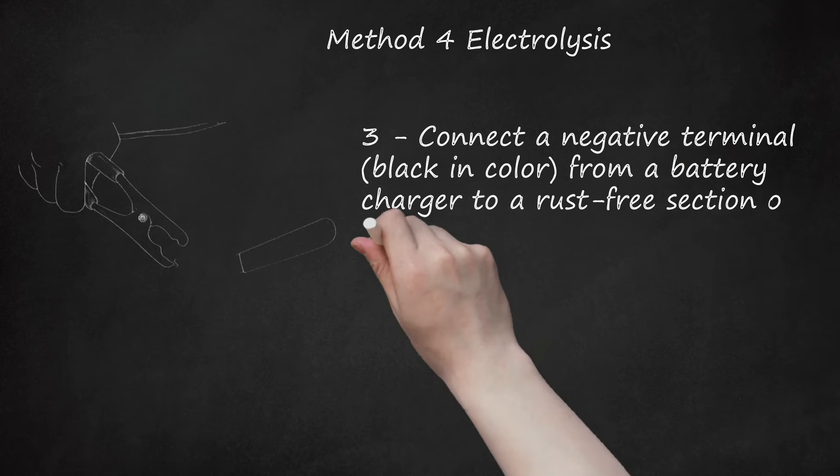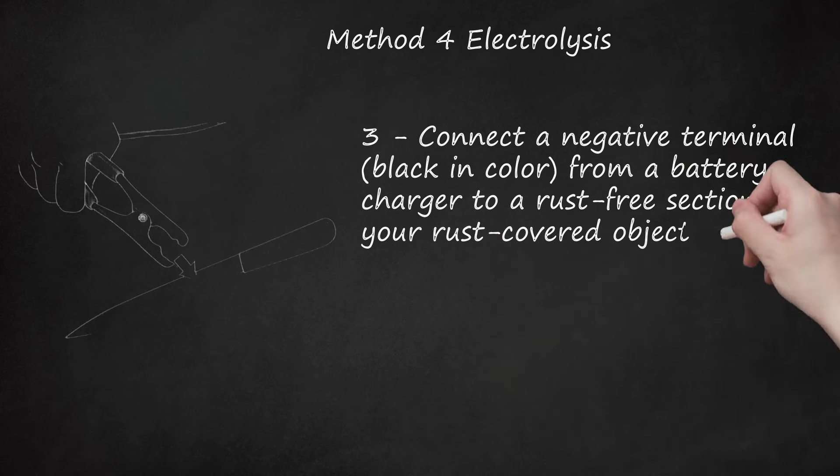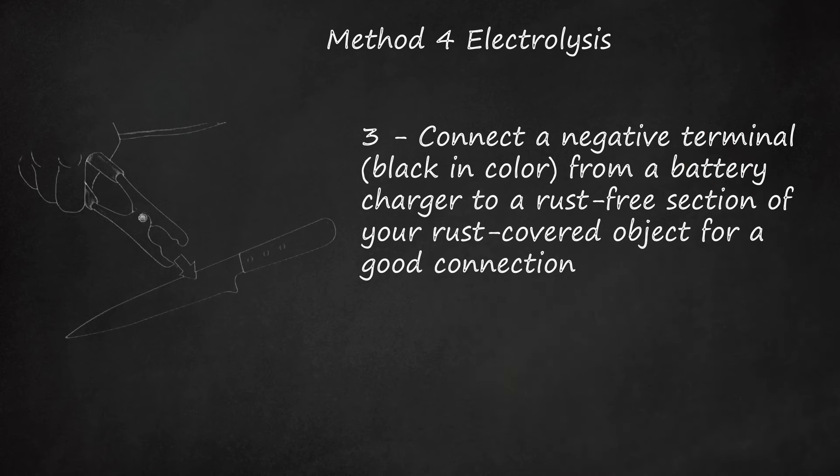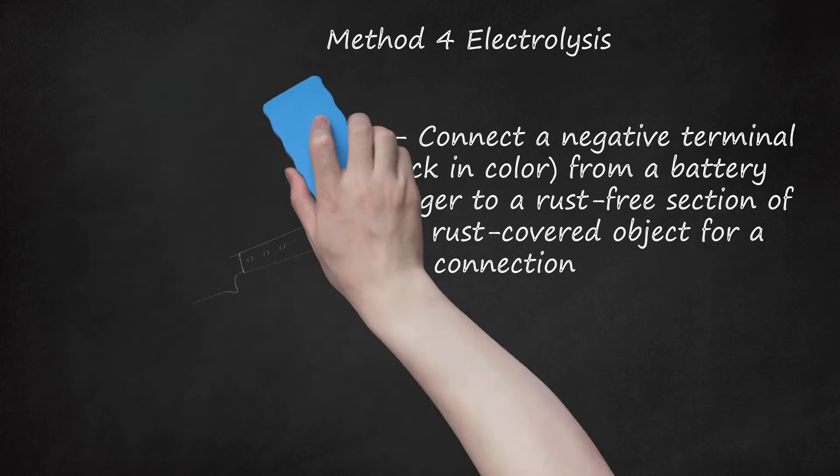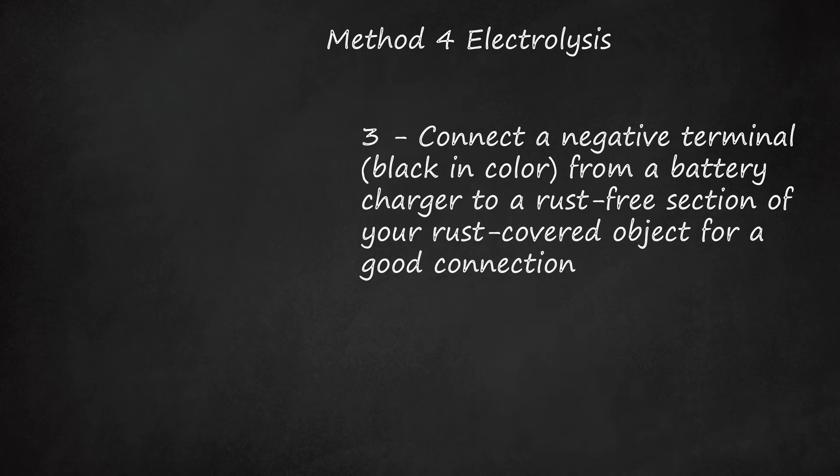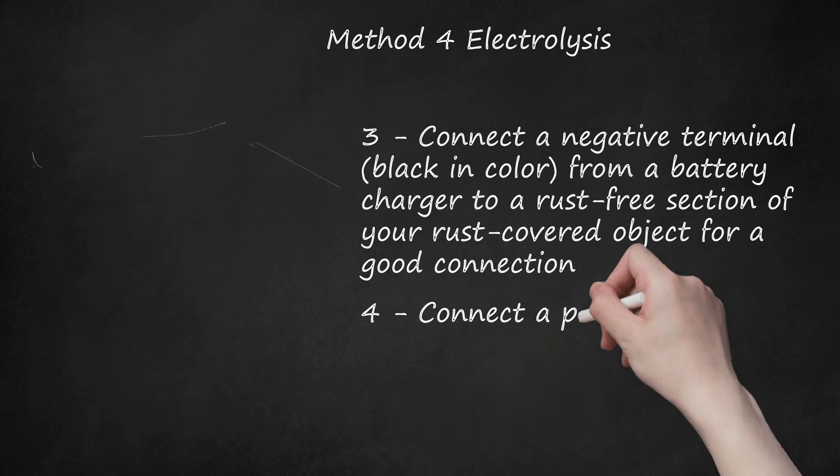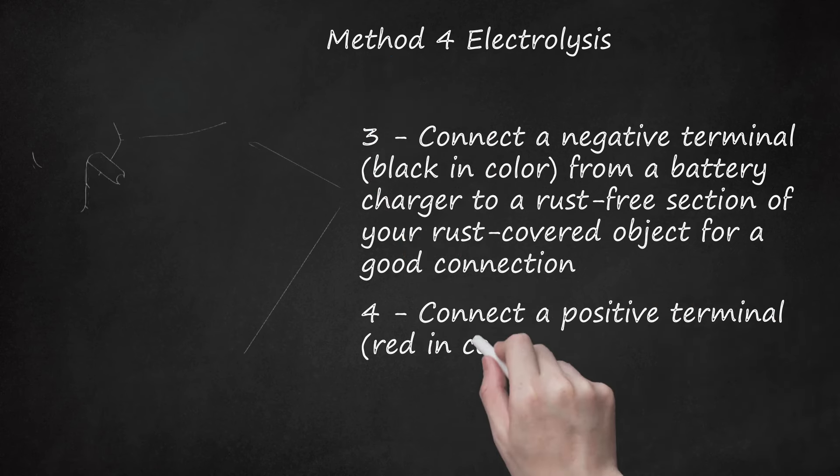Third, connect a negative terminal, black in color, from a battery charger to a rust-free section of your rust-covered object for a good connection. You may have to manually scrape away some rust to achieve this. Fully submerge the rusty object, taking care to keep as much as possible of the wire out of the water. Caution: make sure this rusted object does not touch the anode to prevent an electrical short circuit, a short.